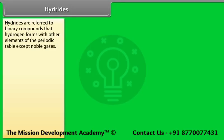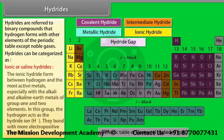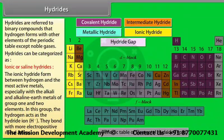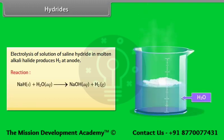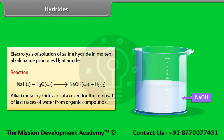Hydrides are binary compounds that hydrogen forms with other elements of the periodic table except noble gases. Ionic hydrides form between hydrogen and the most active metals, especially alkali and alkaline earth metals of groups 1 and 2. In these, hydrogen acts as the hydride ion and bonds with more electropositive metal atoms. Electrolysis of saline hydride in molten alkali halide produces H₂ at the anode. Alkali metal hydrides are also used for the removal of last traces of water from organic compounds.